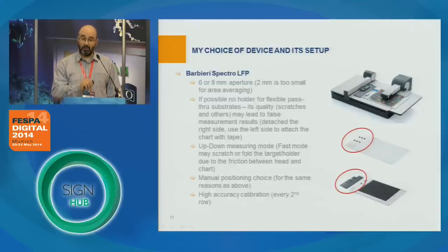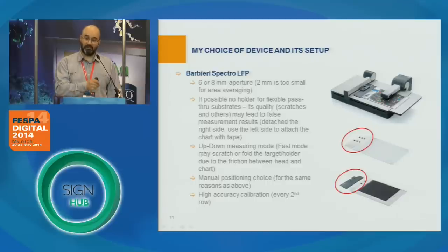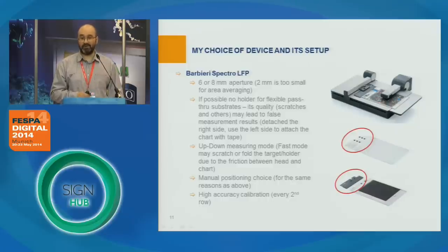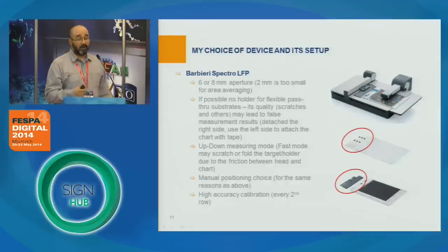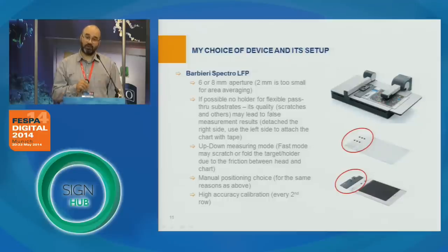Another consideration is how you register the measurement area. This can be done in automatic mode, but that implies the measurement head will move across the surface of the sample. To avoid scratches, it's much easier done with manual mode — you just select the corners of the area you are going to measure manually. Because we want high quality measurements, we use the so-called high accuracy setting, which means the measurement head will calibrate every second row.